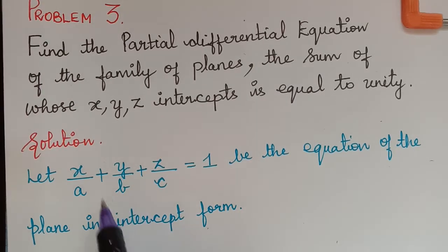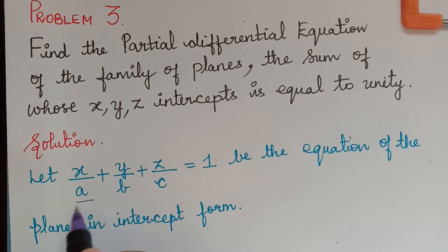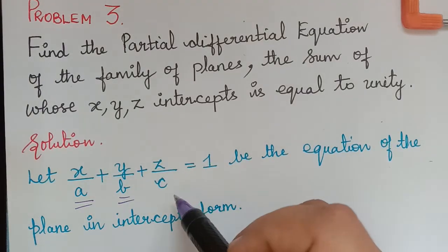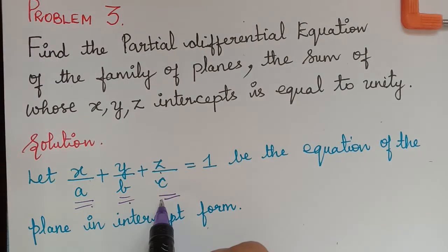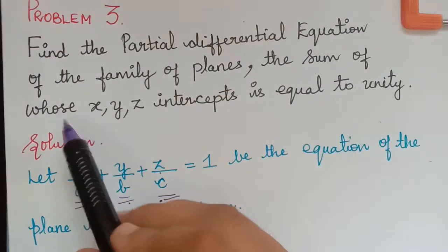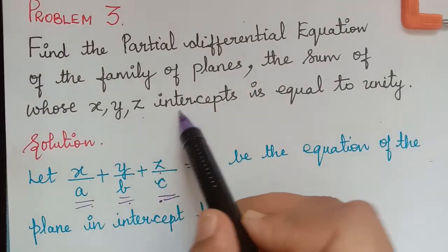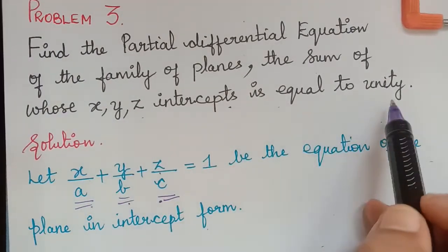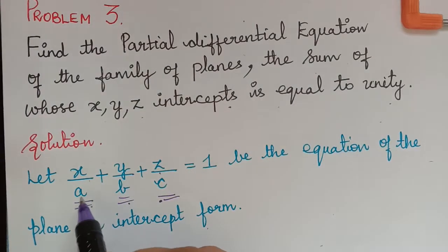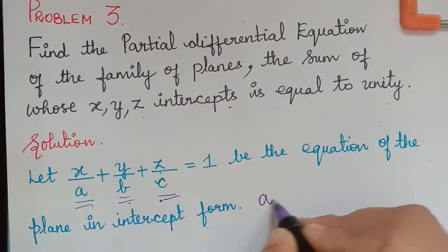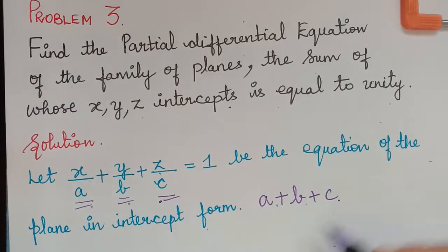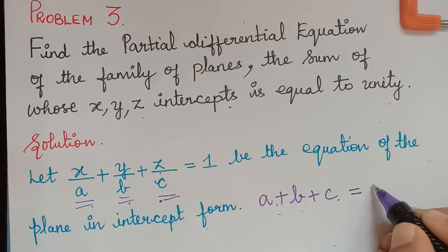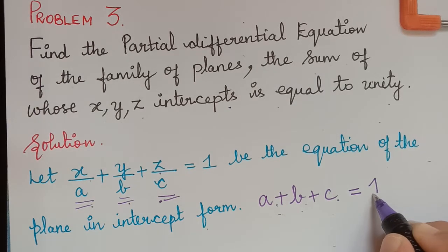The x intercept is a, the y intercept is b, and the z intercept is c. So a, b, c are the intercepts of x, y, z respectively. They have given that the sum of the x, y, z intercepts is equal to unity, so a + b + c = 1.